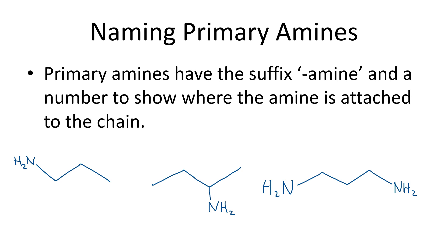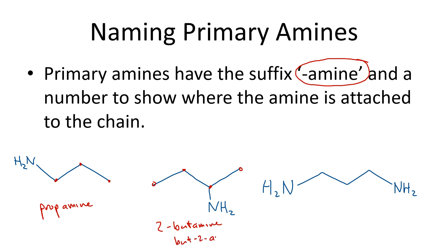Naming amines is pretty easy — you just use the suffix '-amine' and a number to show where it is on the chain. So with one, two, three carbons, this is propan-1-amine. With one, two, three, four carbons, this would be butan-2-amine. And here with three carbons and amines on carbons one and three, this is propane-1,3-diamine.